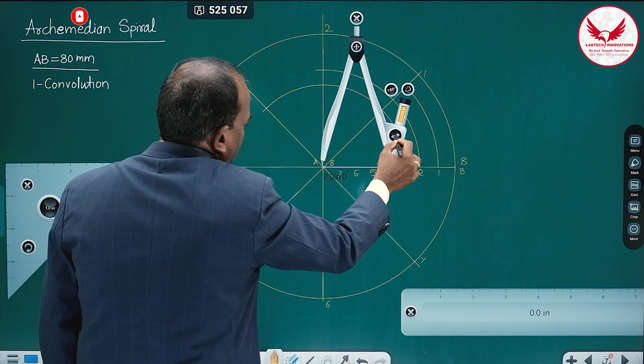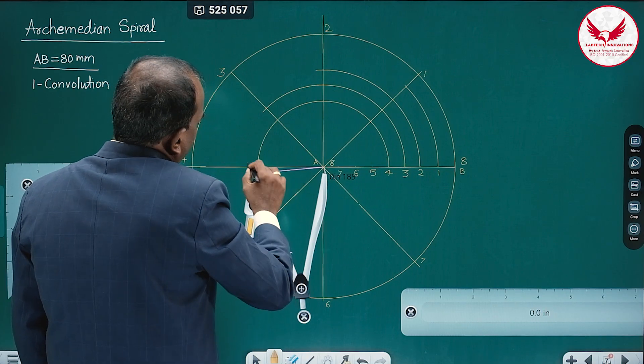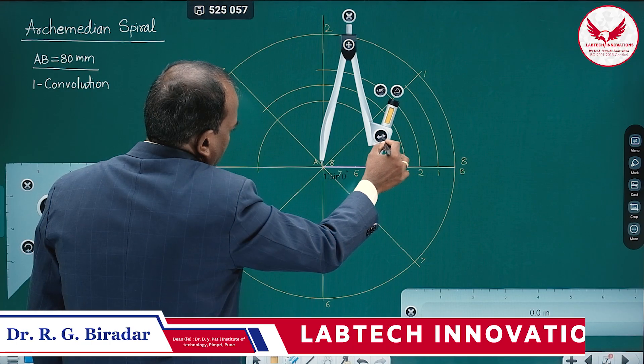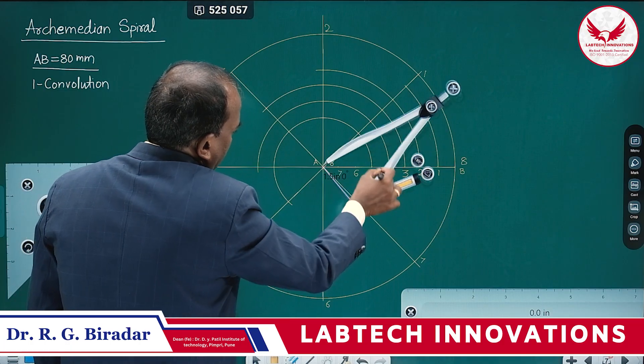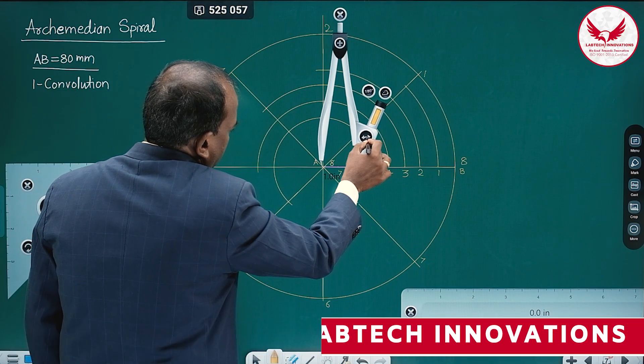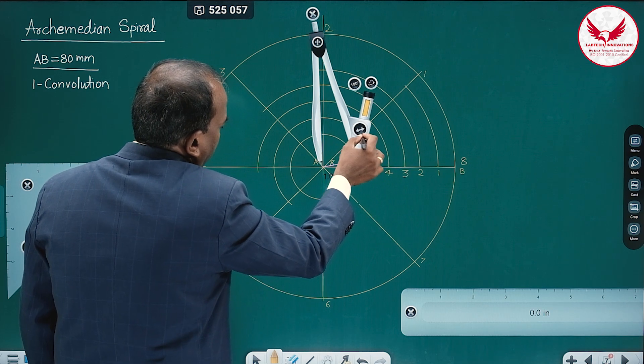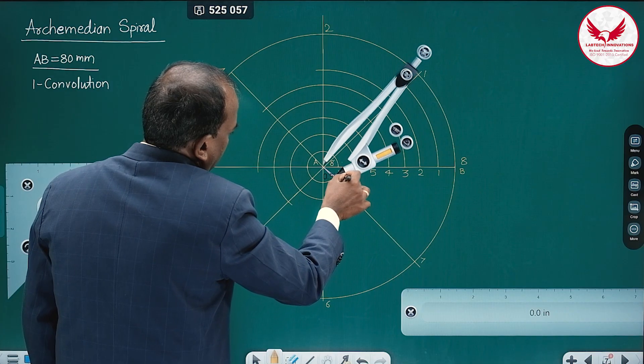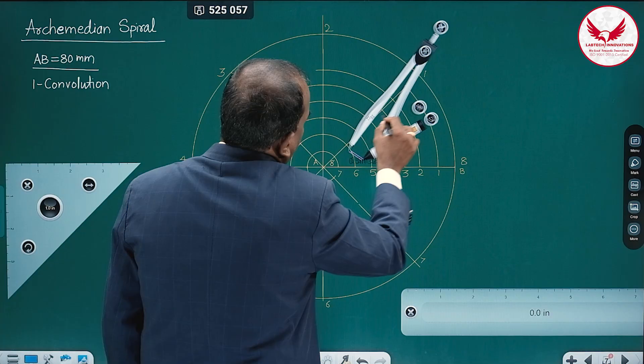Then distance A to 4, and intersection on line 4. And now 5, then rotate it. Then 6. Then finally the last point we will get like this. So like this we will get the 8 points.